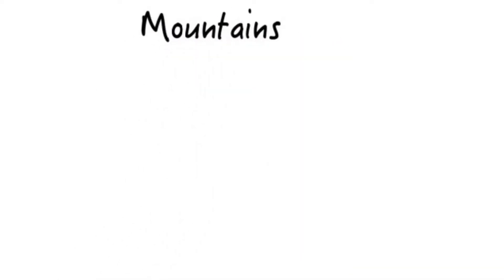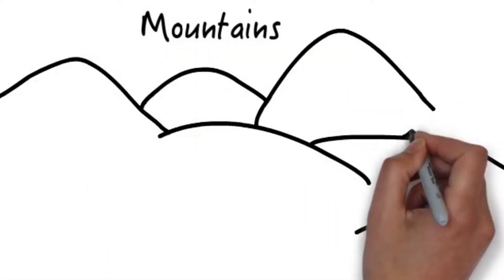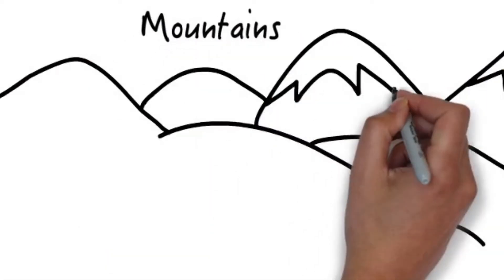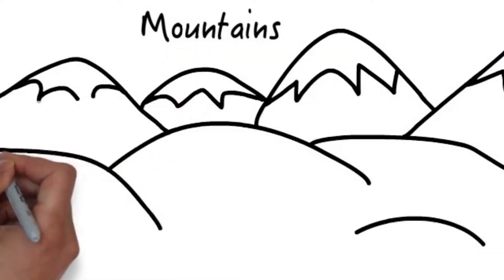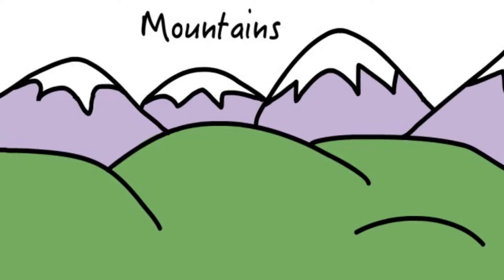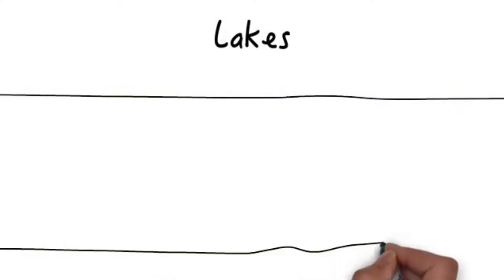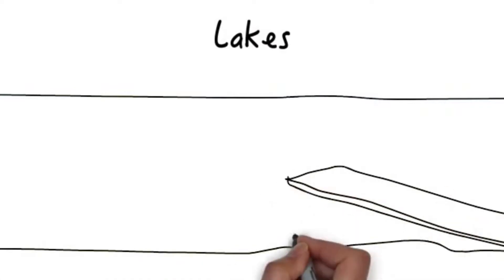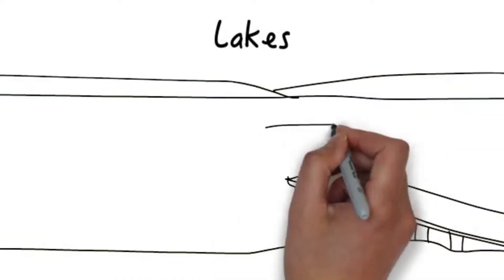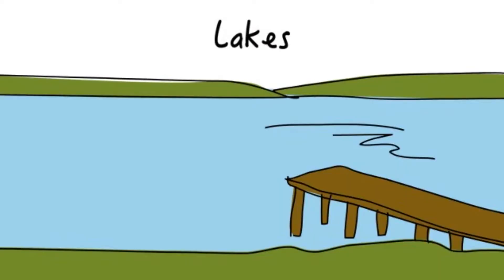Mountains are the highest landforms. Some are rounded while others are pointed or rocky. Lakes are landforms filled with accumulated water from precipitation, rivers, and streams.